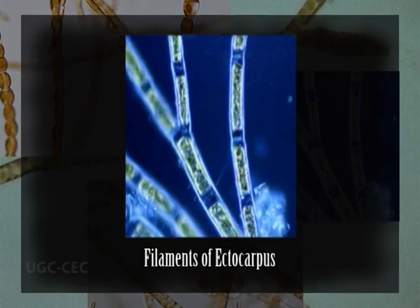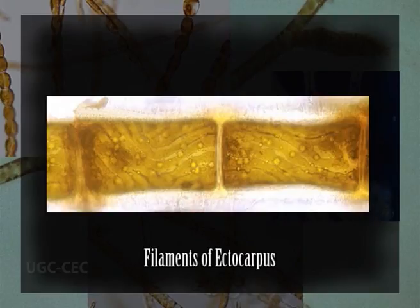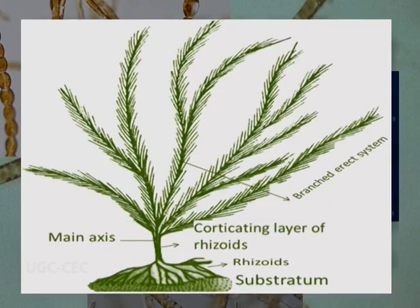Now we come to the morphology of the plant. The plant body is filamentous and heterotrichous. The thallus is sparsely to profusely branched, with cells joined end to end in a single cell series, as monosiphonous. The thallus is differentiated into an irregular prostrate system and a branched erect system. The prostrate portion is attached to the substratum and remains creeping on it, whereas branches of the erect system develop from the prostrate system and form a tuft. The branches are always lateral and arise just beneath the septa.